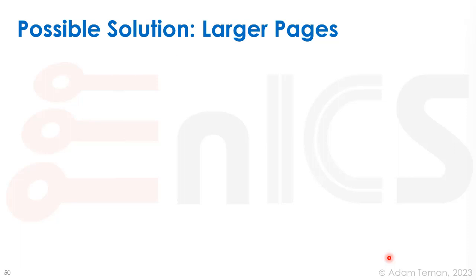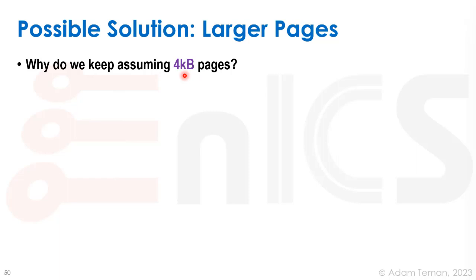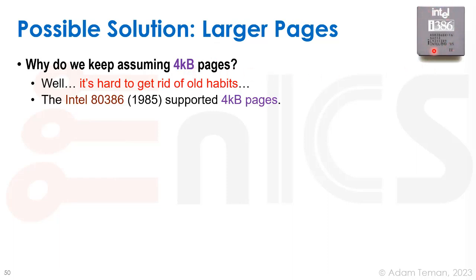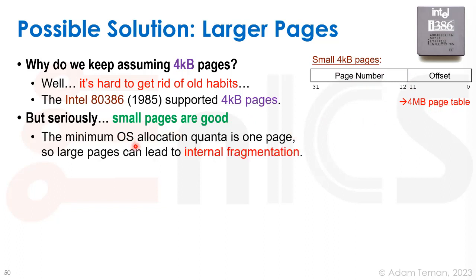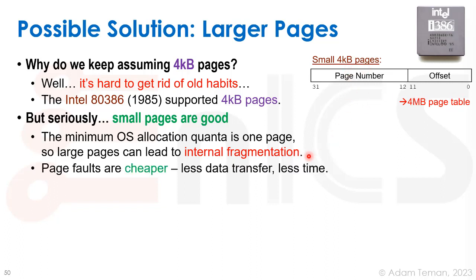One possible solution is using larger pages. Why do we keep assuming these small four-kilobyte pages when we have 16 or more gigabytes of memory, or even a terabyte on servers? The reason is really hard-to-break old habits — the Intel 386 from 1985 decided to support four-kilobyte pages and we've kept them since. Small pages do have benefits: the minimum OS allocation quanta is one page, so large pages can lead to internal fragmentation. With four-kilobyte pages, fragmentation is negligible. Also, page faults are cheaper since we only need to transfer four kilobytes at a time.